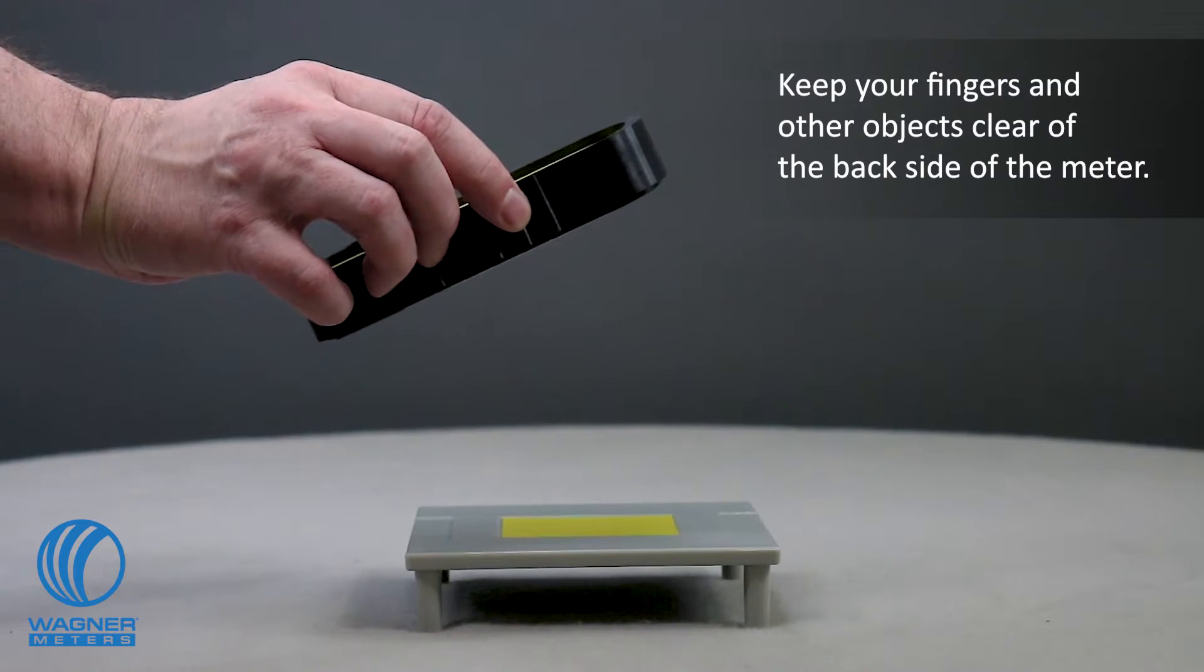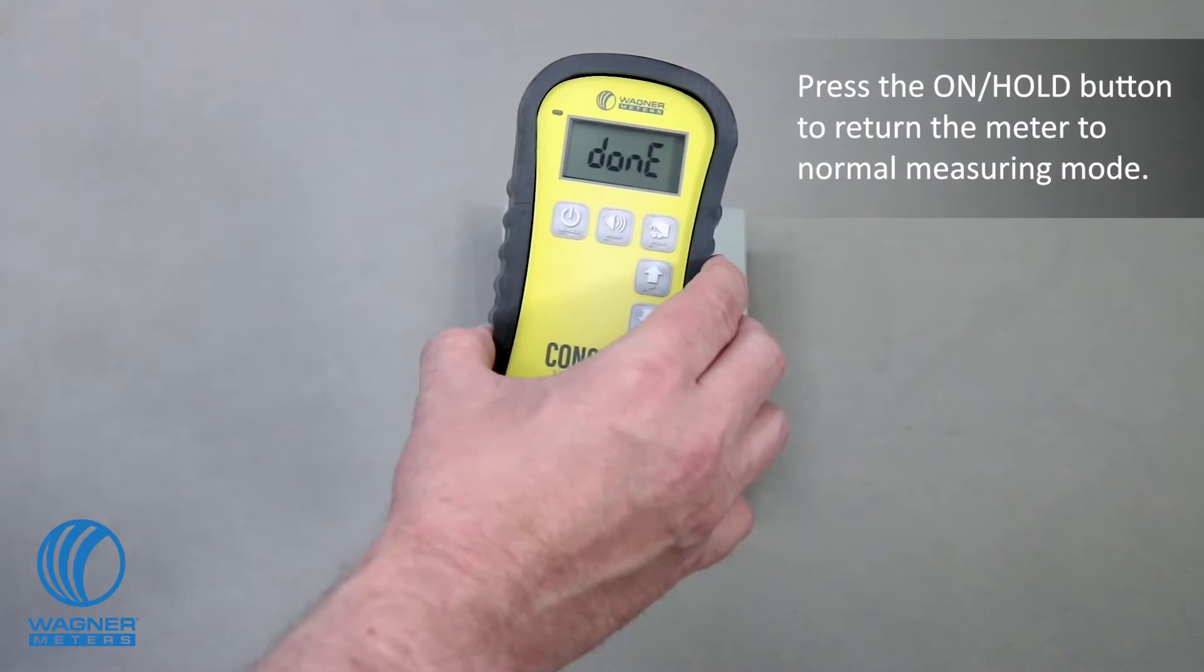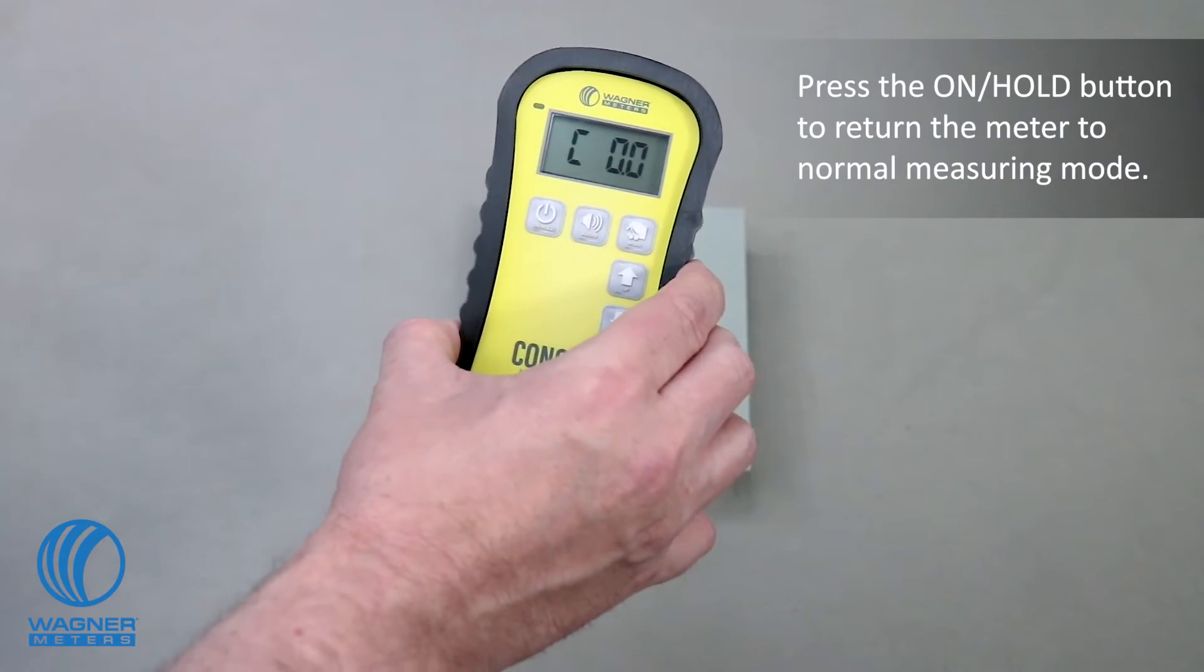Keep your fingers and other objects clear of the backside of the meter. Press the on hold button to return the meter to normal measuring mode.